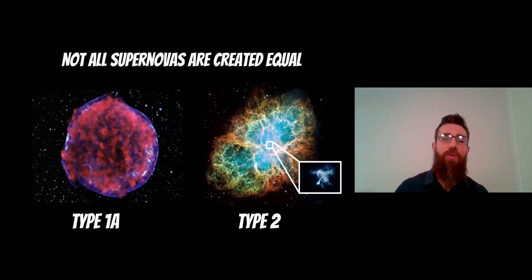Not all supernovas are created equal, and the example I've got here is a type 1a and a type 2. If you look at them here in the images, yes they do look different, but they wouldn't necessarily be that easy to tell the differences visually because one is younger than the other and they obviously evolve because they're still expanding. But let's have a look at the differences between these two types.